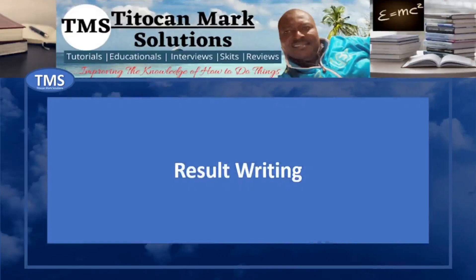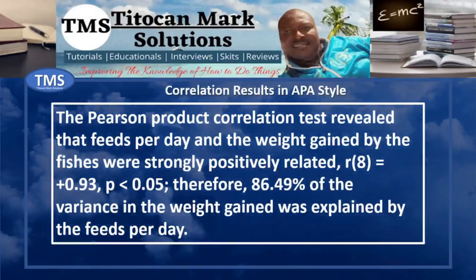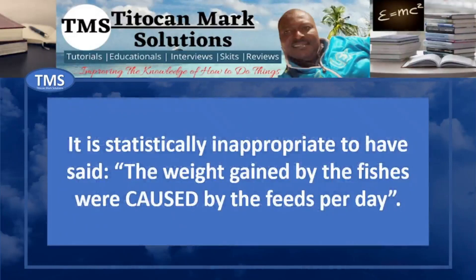In reporting the result, you are expected to write in APA style to meet the requirements of the general standard of writing correlation results. The Pearson's product correlation test revealed that feeds per day and the weight gained by the fishes were strongly positively related. The correlation coefficient at 8 degrees of freedom is equal to plus 0.93, p less than 0.05. Therefore, 86.49% of the variance in the weight gained was explained by the feeds per day. It is statistically inappropriate to say the weight gained by the fishes was caused by the feeds per day, because correlation is not a causal effect, and there were external factors that also accounted for the variance observed not explained by the coefficient of determination.